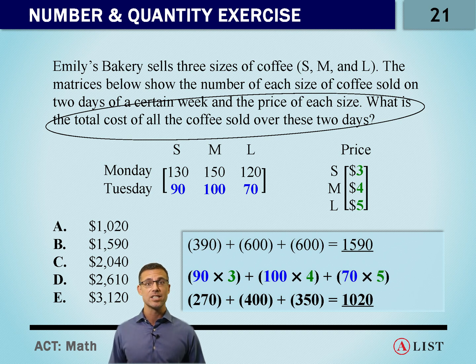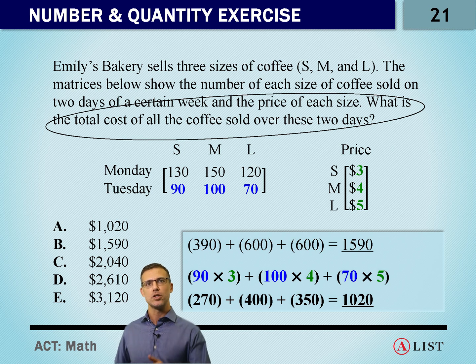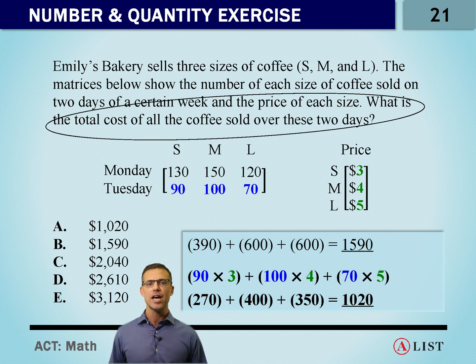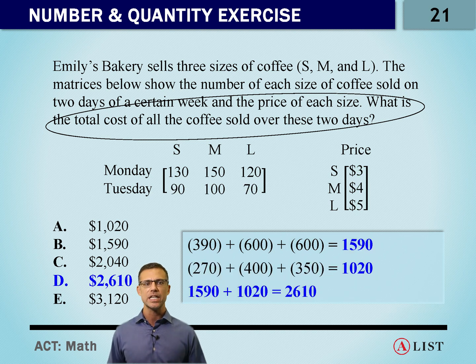Notice here that A says a thousand and twenty. If you chose A, it's because you only calculated Tuesday. If you chose B, it's because you only calculated Monday. But if we have all of our work shown, and we compare it to what the question asks, we should be putting those two numbers together and getting two thousand six hundred and ten dollars, which is answer choice D.